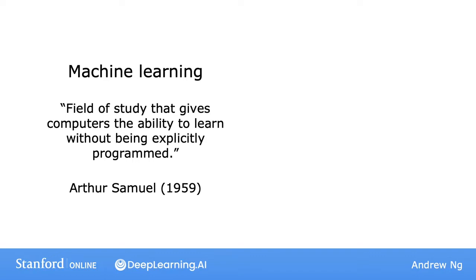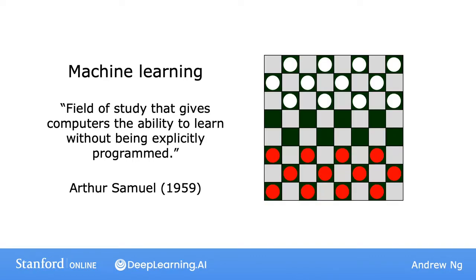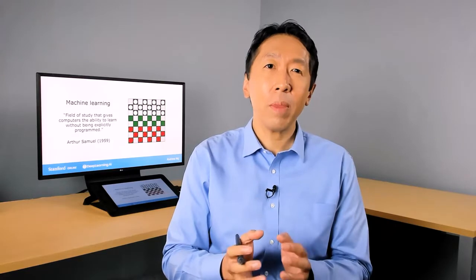Samuel's claim to fame was that back in the 1950s he wrote a checkers playing program, and the amazing thing about this program was that Arthur Samuel himself wasn't a very good checkers player. What he did was program a computer to play tens of thousands of games against itself. By watching what sorts of board positions tended to lead to wins and what positions tended to lead to losses, the checkers playing program learned over time about good or bad board positions. By trying to get to good and avoid bad positions, his program learned to get better and better at playing checkers. Because the computer had the patience to play tens of thousands of games against itself, it eventually became a better checkers player than Arthur Samuel himself.